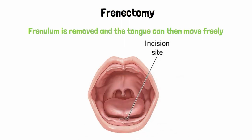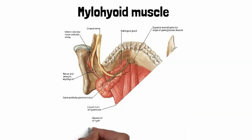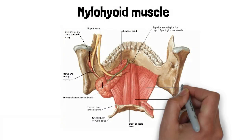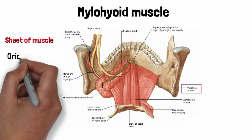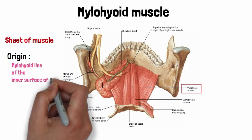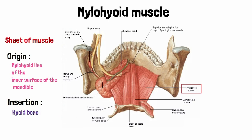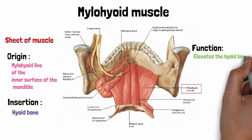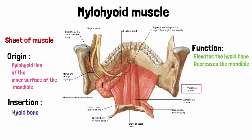The next major structure that forms the floor of the oral cavity is the mylohyoid muscle. The mylohyoid muscle is kind of like a sheet of muscle extending across the floor of the oral cavity. It arises from the mylohyoid line of the inner surface of the mandible and is inserted into the hyoid bone. Apart from forming the floor of the oral cavity, it also elevates the floor of the mouth in the first stage of deglutition, elevates the hyoid bone, and depresses the mandible. In about one third of the population, there is a hiatus in the mylohyoid muscle through which a process of the sublingual gland protrudes.